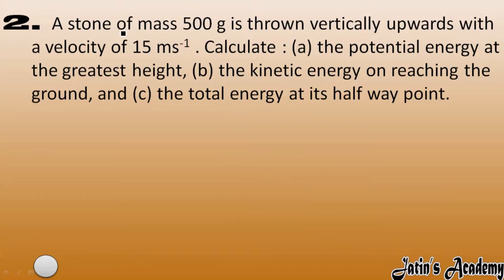A stone of mass 500 grams is thrown vertically upward with a velocity of 15 meters per second. Calculate the potential energy at the greatest height, kinetic energy on reaching the ground, and the total energy at its halfway point.